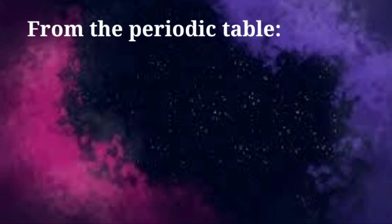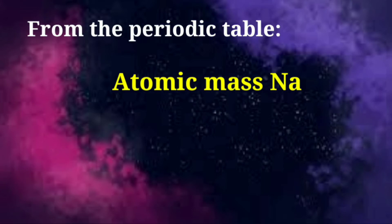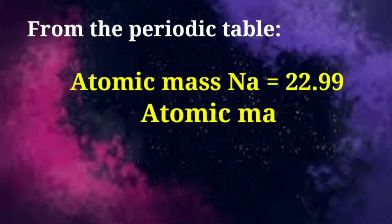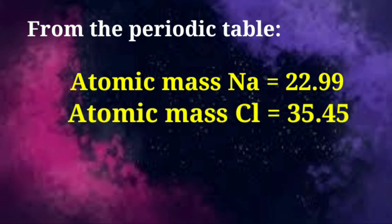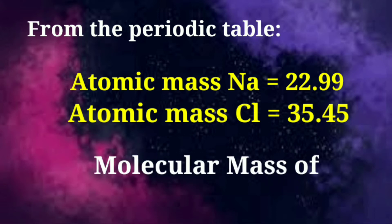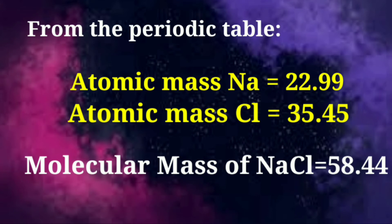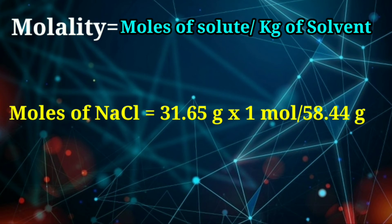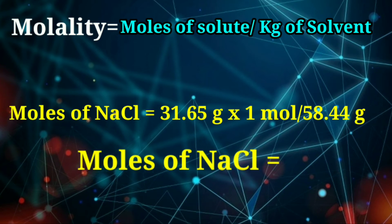The atomic mass of sodium is 22.99 and chlorine is 35.45. Sodium chloride — this is the molecular mass — it is about 58.44 grams per mol. We put 38.44 grams divided by 58.44 grams per mol; this is about 0.542 mol.